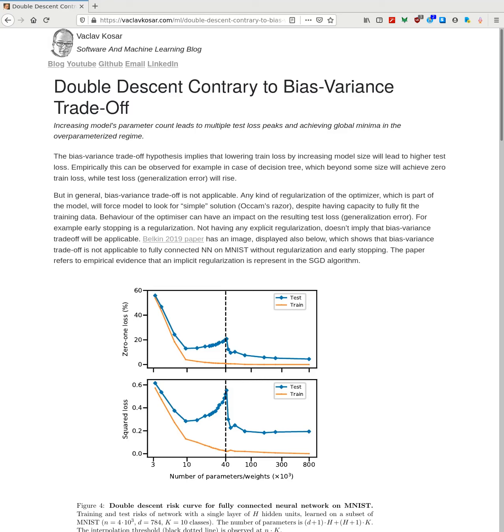So why the bias-variance trade-off is not applicable. So mostly it is because any kind of regularization in the model or even in the optimizer, where the optimizer is part of the model, which I sometimes sort of completely blank on, and so any kind of regularization will force the model to look for a simple solution.